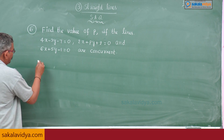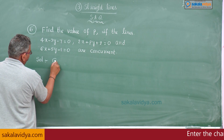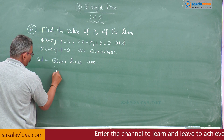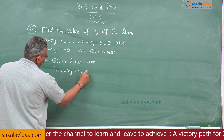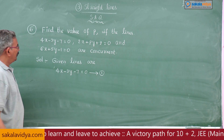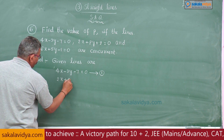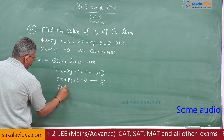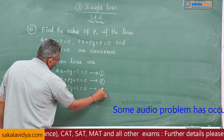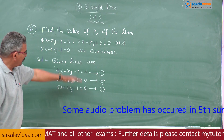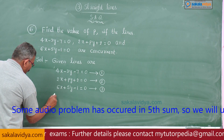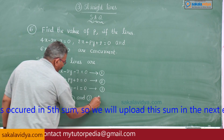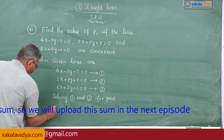That is very simple. First, let us write the given lines: 4x minus 3y minus 7 is equal to 0, equation 1; 2x plus Py plus 2 is equal to 0, equation 2; 6x plus 5y minus 1 is equal to 0, equation 3. It is better to solve the first and third equations for point of intersection. Solving equations 1 and 3 for point of intersection.